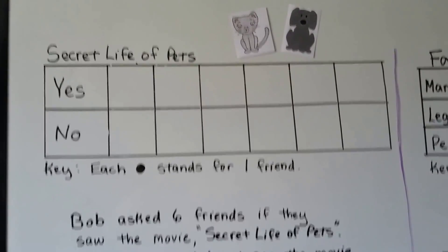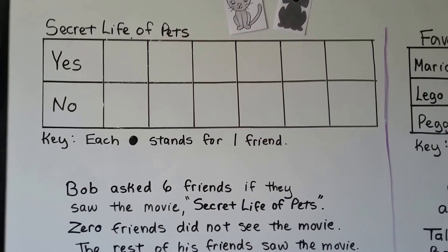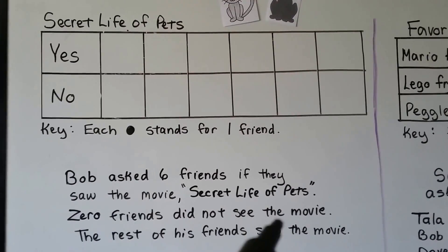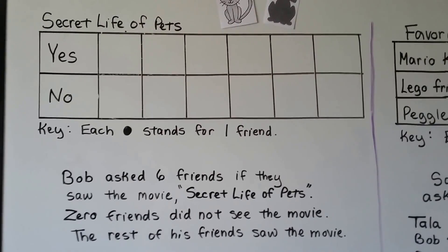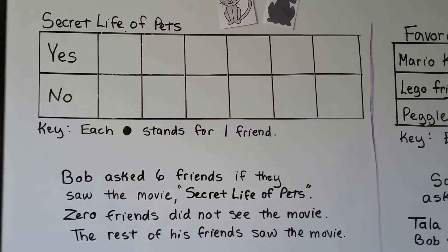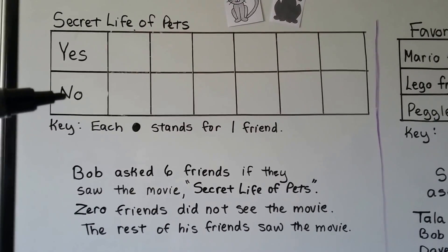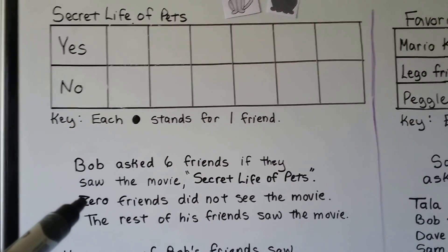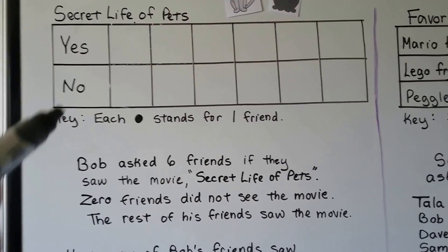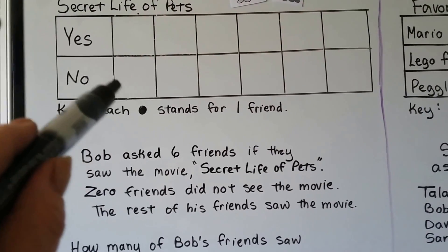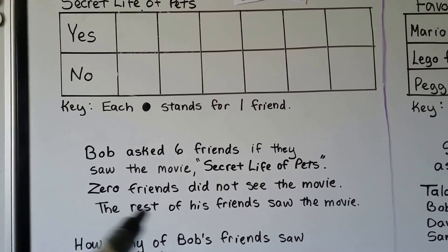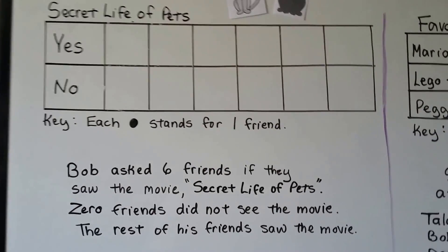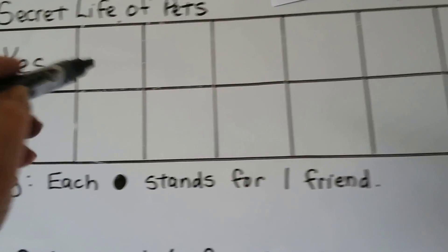Here's another one about the Secret Life of Pets movie. Bob asked six friends if they saw the movie. Zero friends did not see the movie, and the rest of his friends saw the movie. So this is: did you see the movie? Yes or no. Zero friends said no — this seems confusing, but what it's telling us is all of his friends saw the movie.